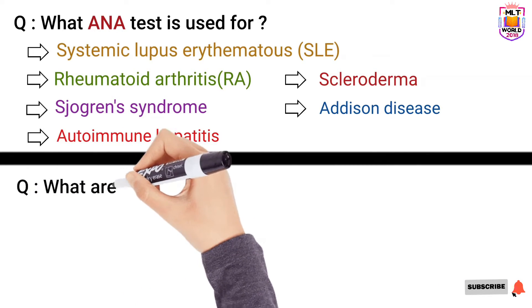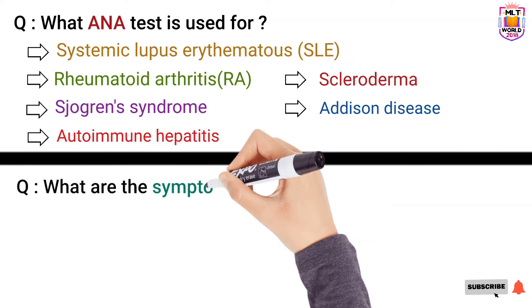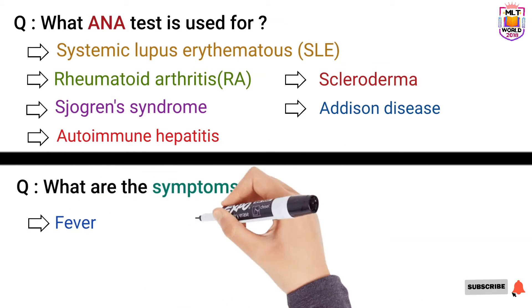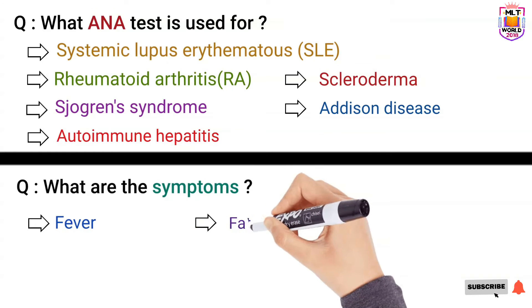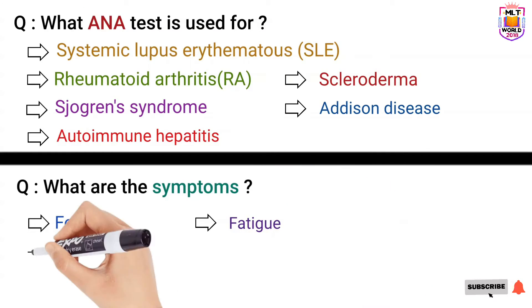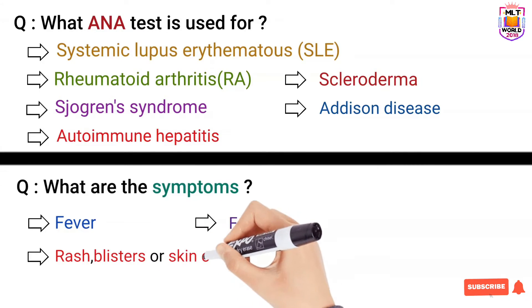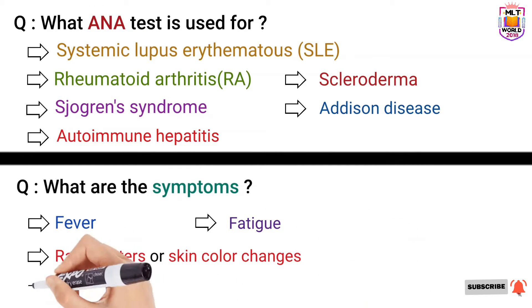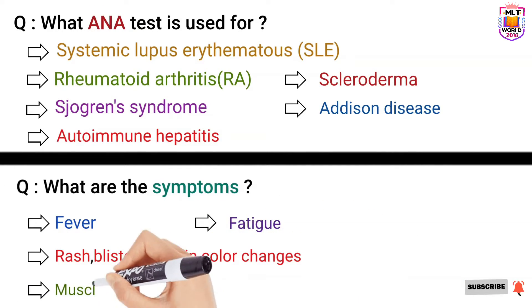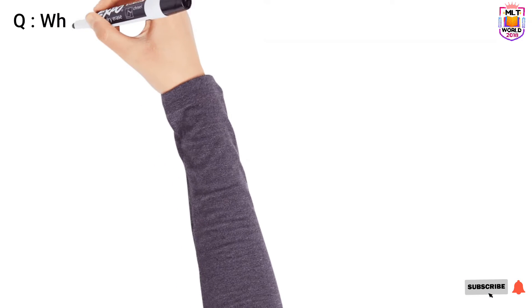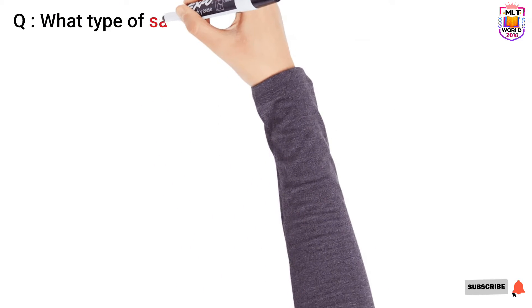So what are the symptoms that patients will show if they have any one of these autoimmune diseases? They will show fever, fatigue, skin rashes, blisters, sometimes skin color changes and muscles and joint pain. These all symptoms will indicate the presence of autoimmune disorder but confirmation is done by ANA test.